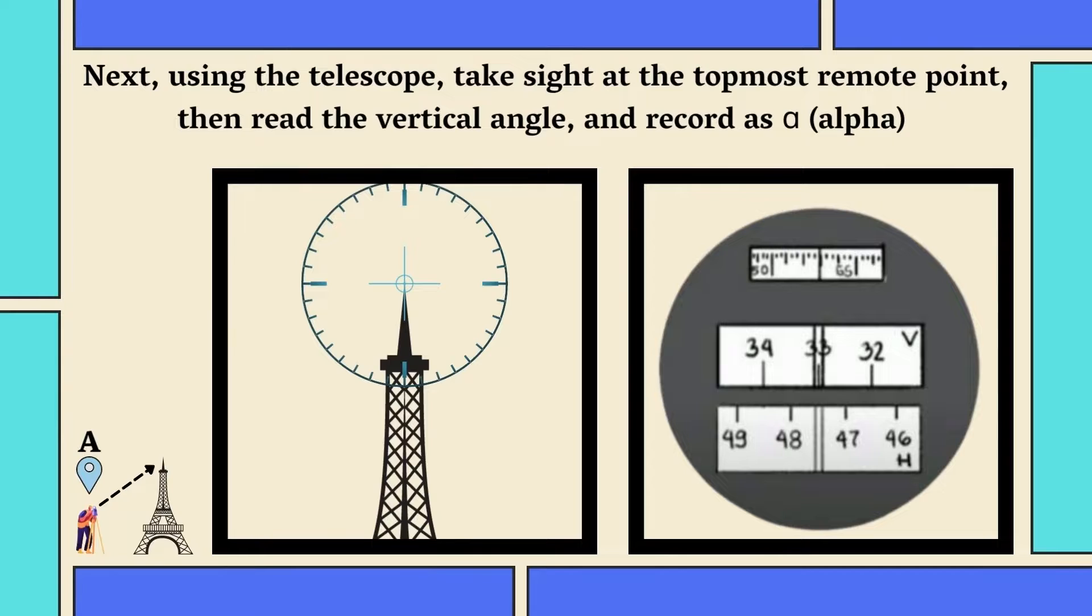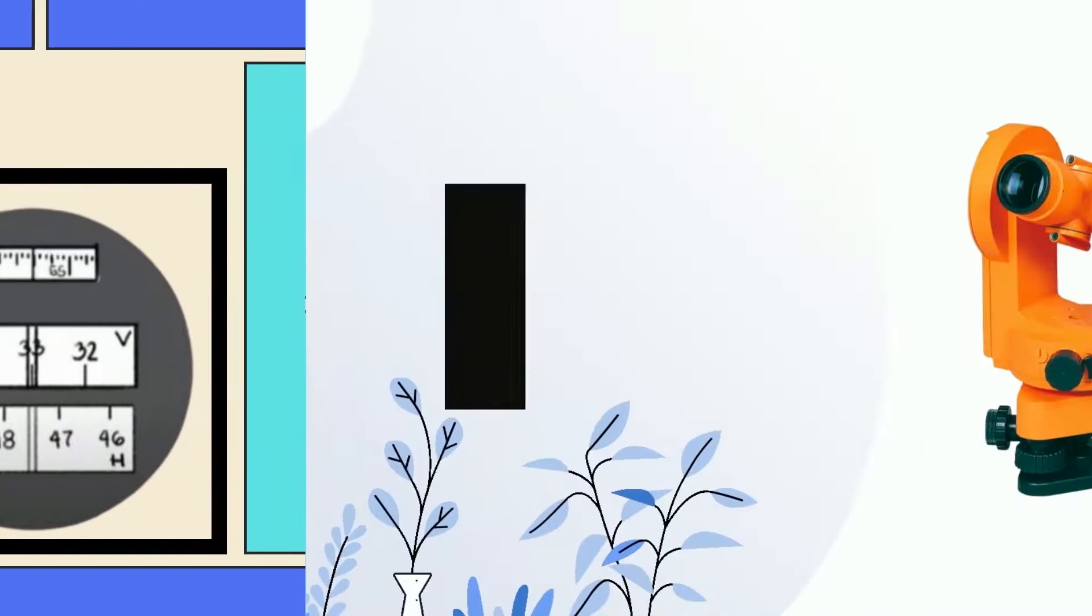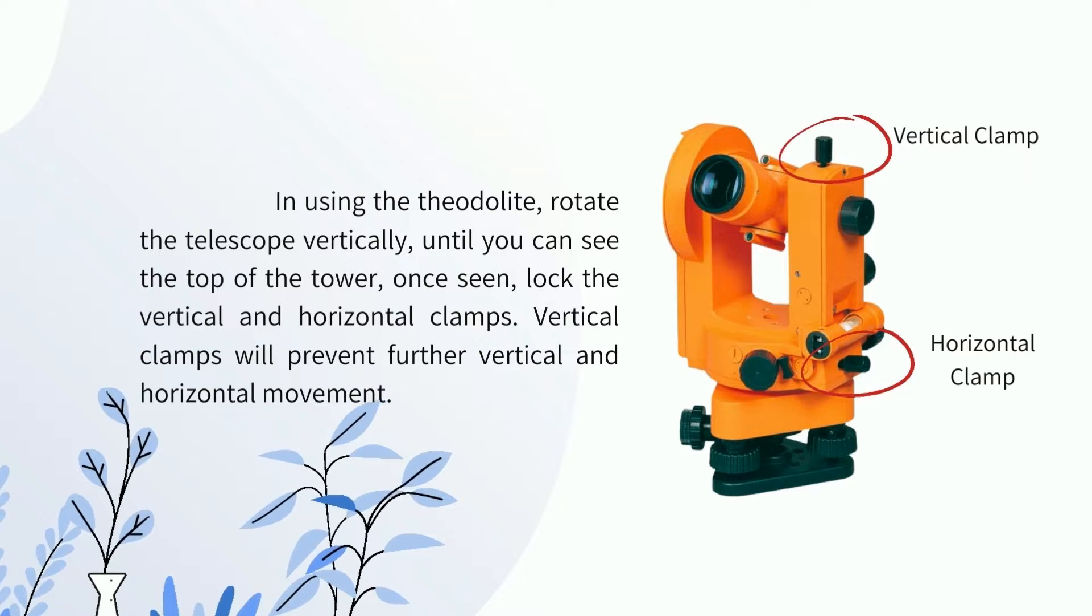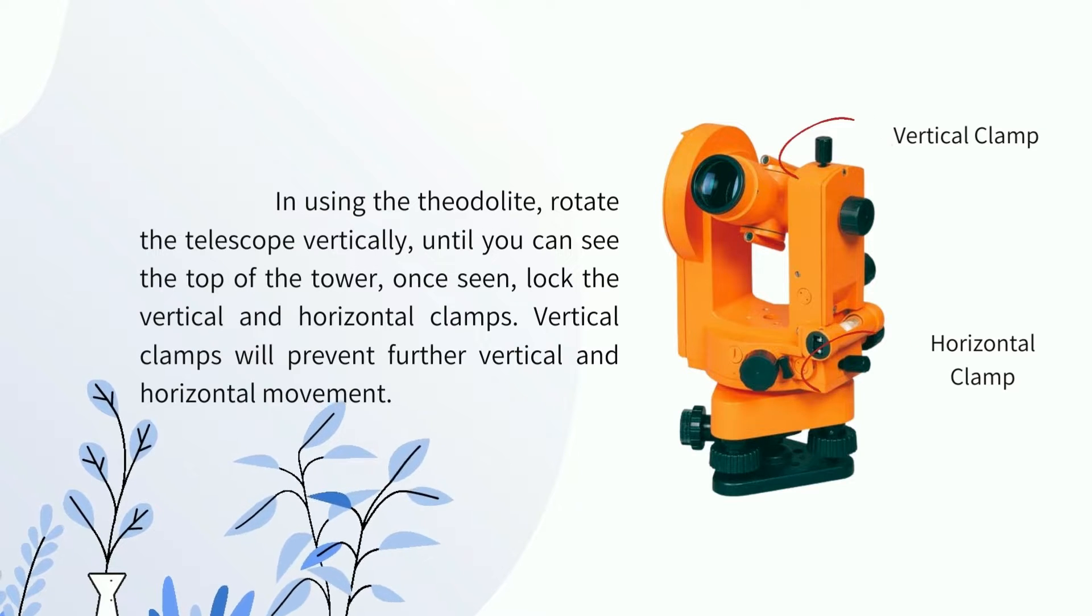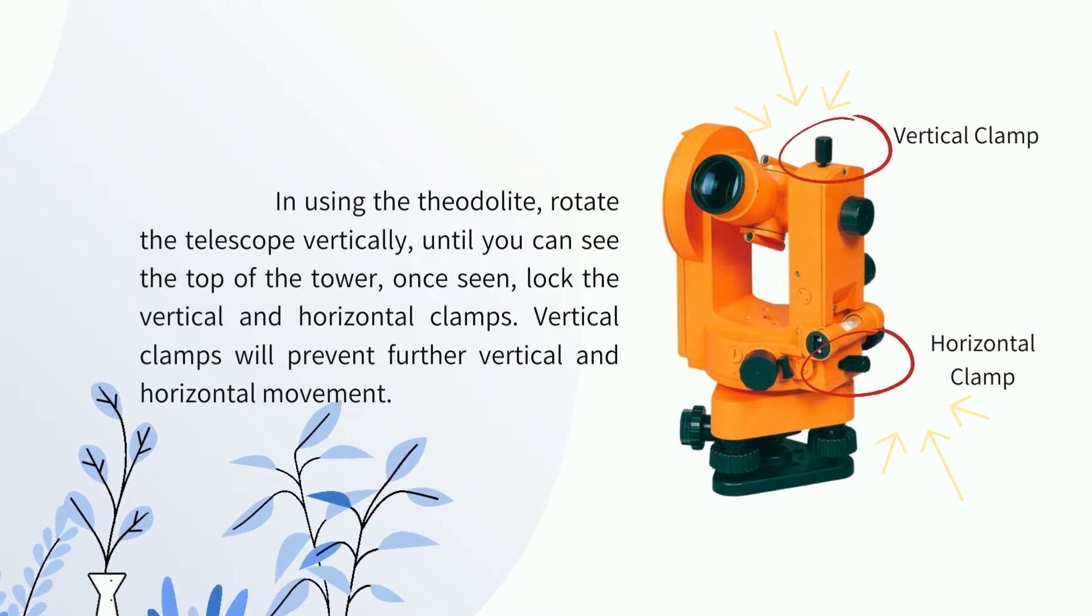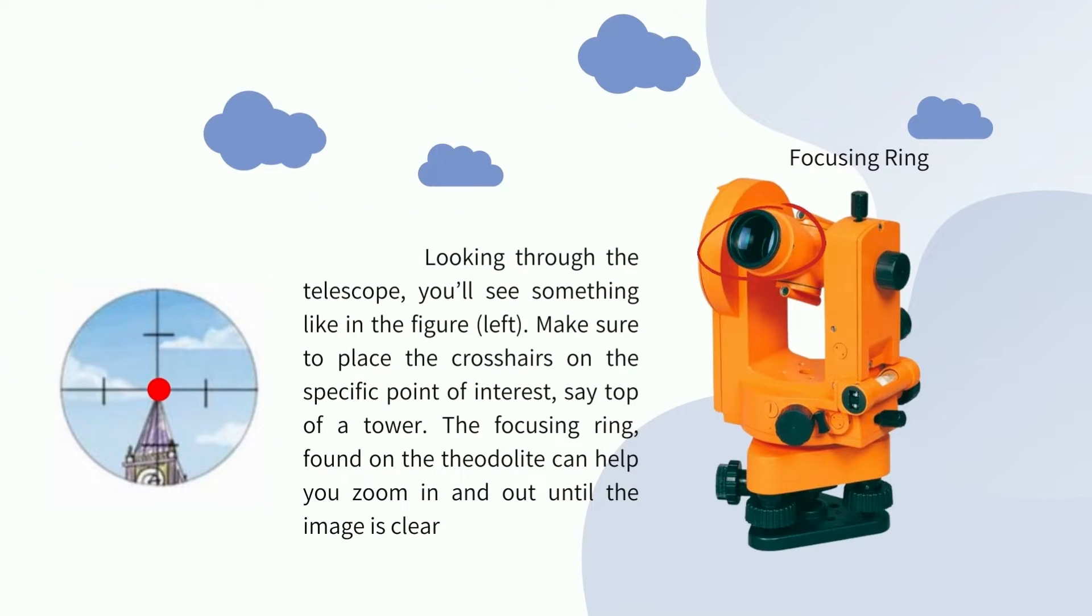Next, using the telescope, take sight at the topmost remote point, then read the vertical angle and record as alpha. In using the theodolite, rotate the telescope vertically until you can see the top of the tower. Once seen, lock the vertical and horizontal clamps. Vertical clamps will prevent further vertical and horizontal movement. Vertical and horizontal clamps are seen here. Looking through the telescope, you'll see something like in the figure. Make sure to place the crosshairs on the specific point of interest, say the top of the tower. The focusing ring found on the theodolite can help you zoom in and out until the image is clear.